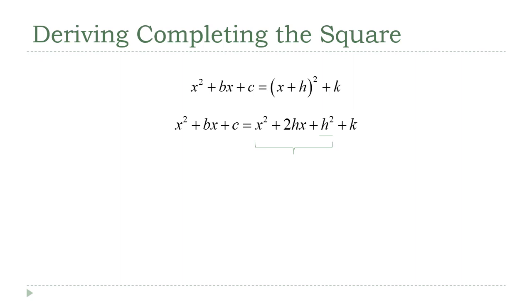For two polynomials to be equal, their corresponding coefficients have to be equal. Specifically, looking at our situation here, the coefficient of the x term on the left—that's b—has to be equal to the coefficient of the x term on the right—that's the 2h. So I'm going to write that: b equals 2h. Now we can solve this for h easily. Divide both sides by 2, h is equal to b over 2.